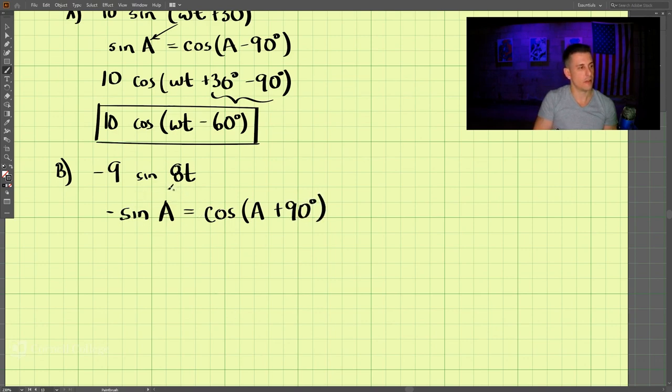So using this value here as our a, we can transform this. What we come out with is 9 cosine of 8t plus 90 degrees. And that is our solution for part b.